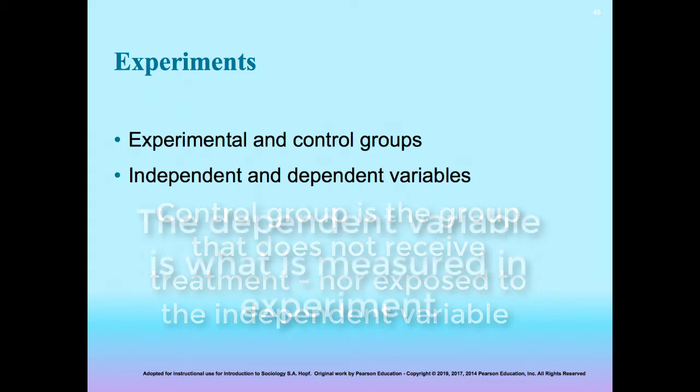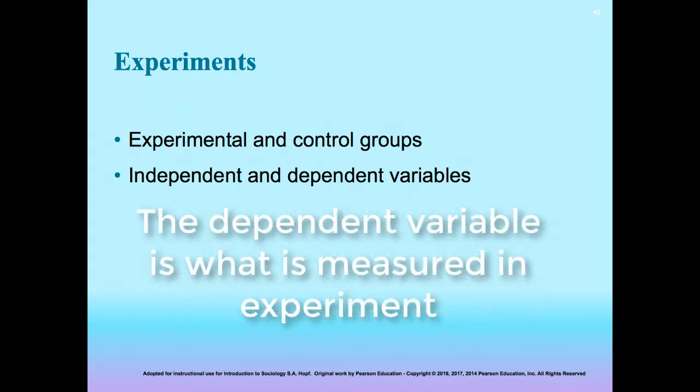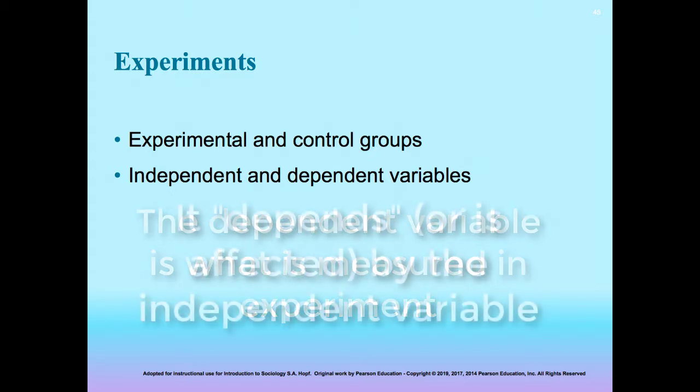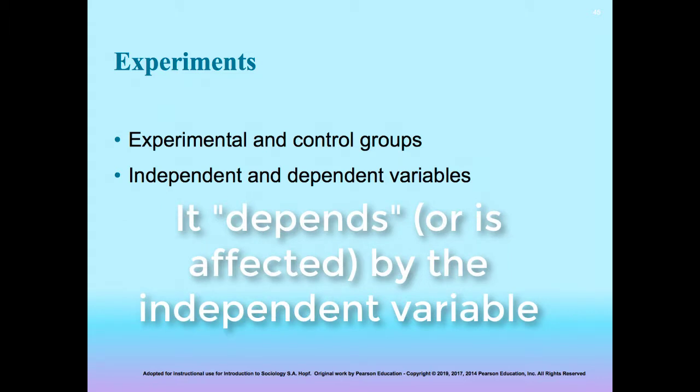A dependent variable is what you measure in the experiment and what is affected during the experiment. It's called the dependent variable because it depends on the independent variable. In a scientific experiment, you cannot have a dependent variable without having an independent variable.